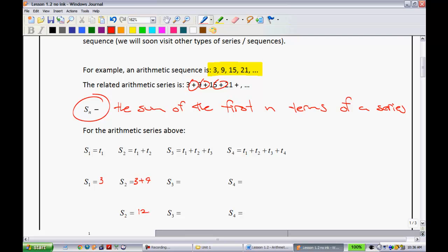The sum of the first two terms is just equal to the first term plus the second term. So, with the example above, I would say 3 plus 9, and the sum of those together is 12. Not exactly rocket science. The sum of the first three terms is just T1 plus T2 plus T3. We add all those together, 3 plus 9 plus 15, and that's equal to 27.